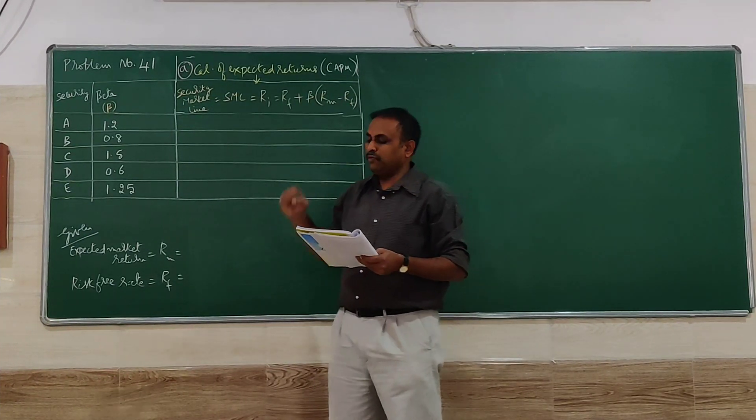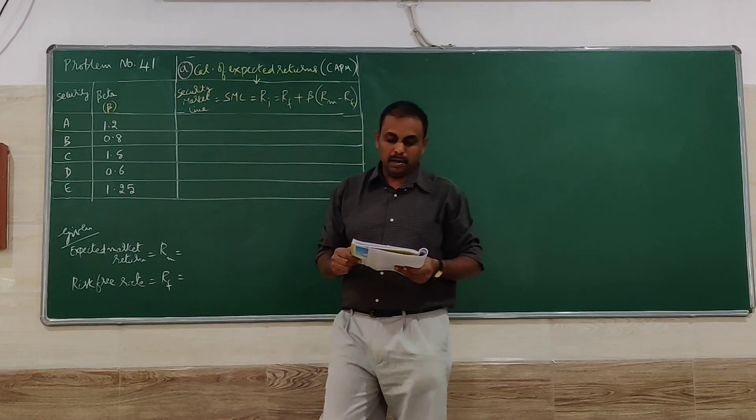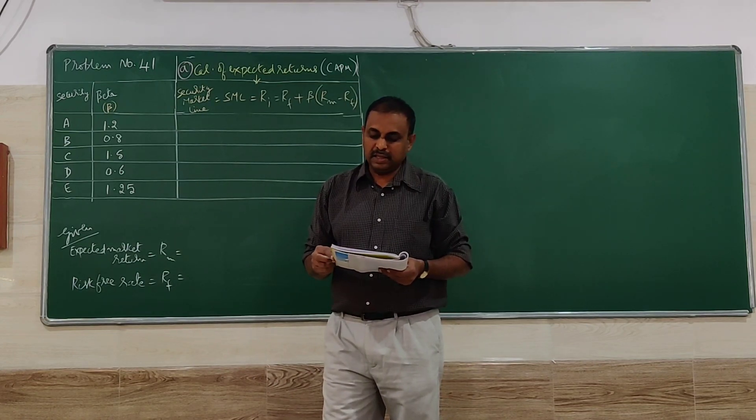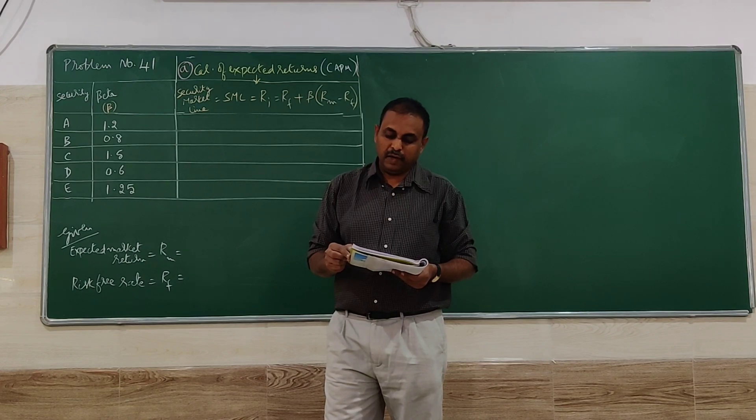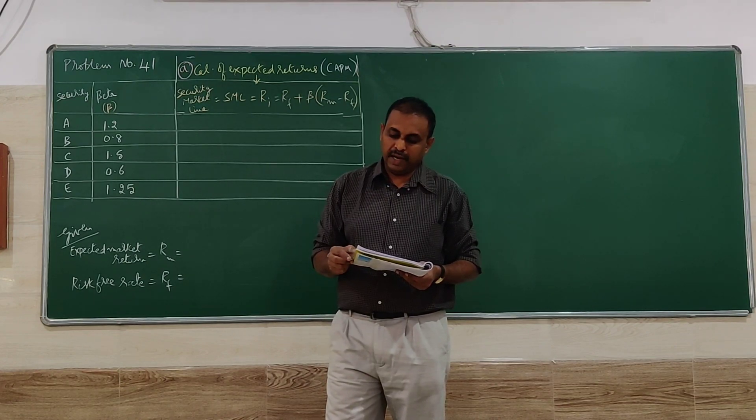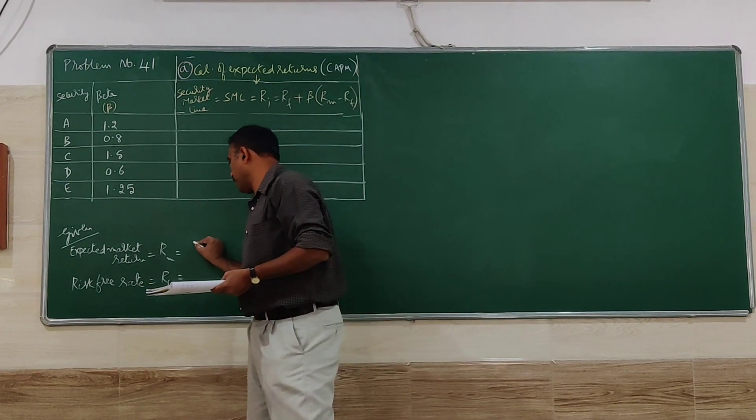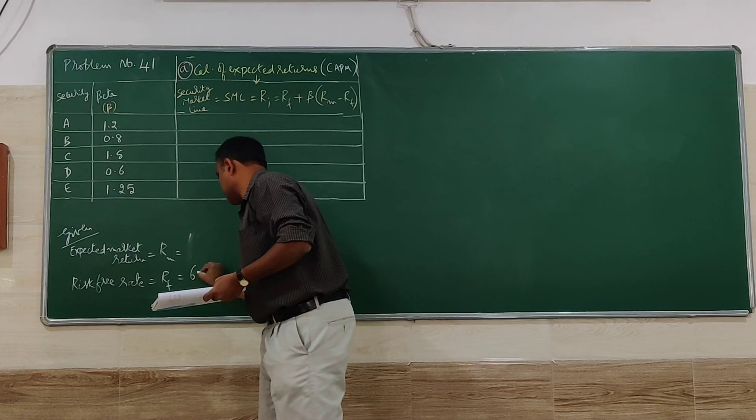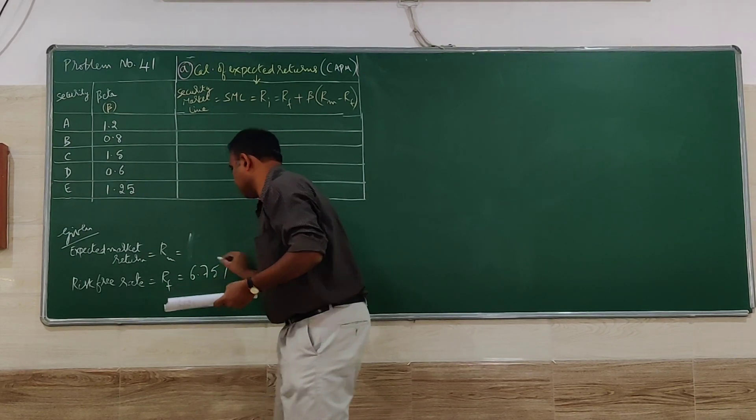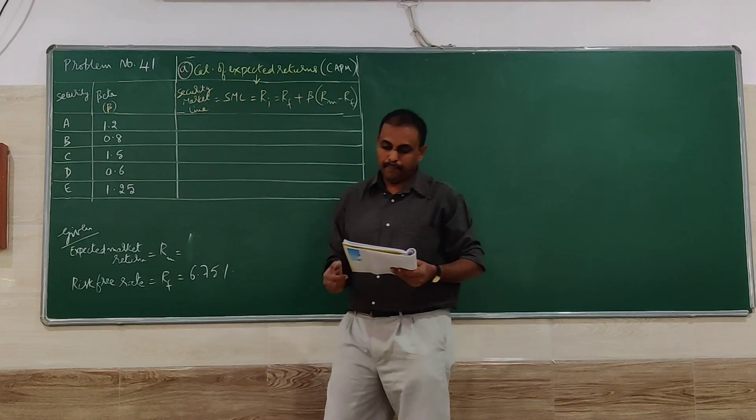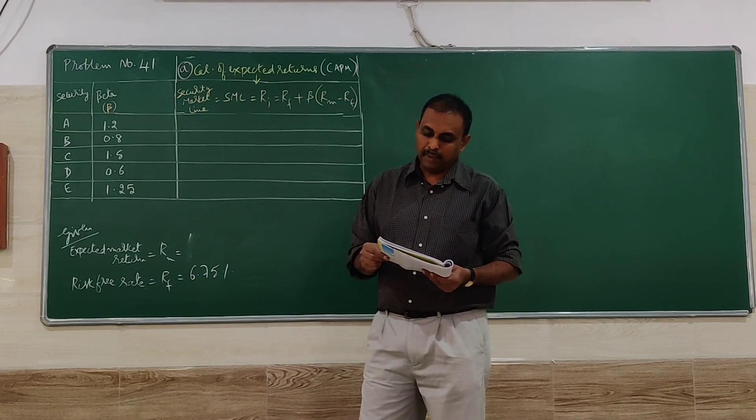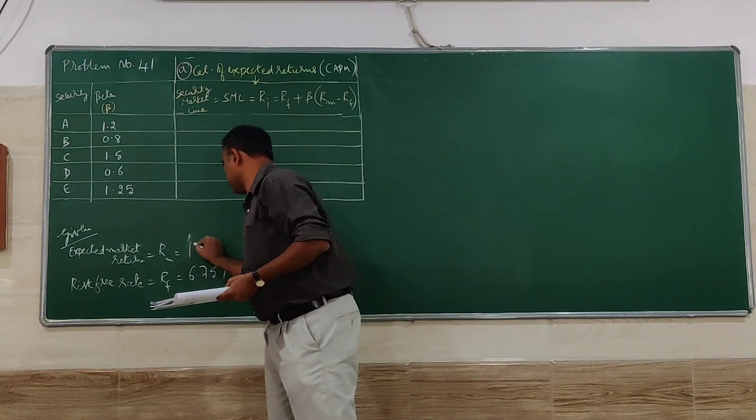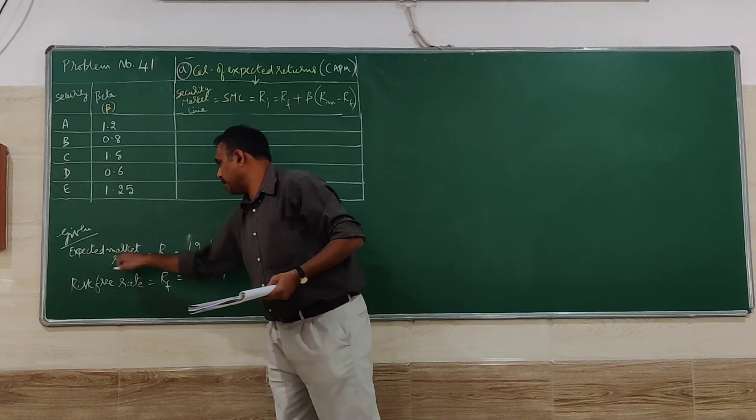Moving to problem number 41, Mr. M is considering several investments. The risk-free rate of return is currently 6.75% and the expected return from the market is 12%. What would be the required rate of return for each investment using the CAPM model?